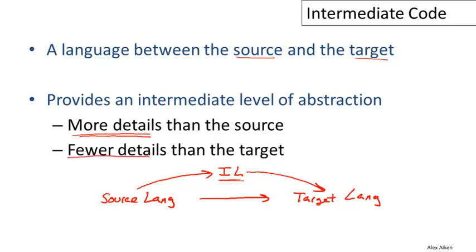On the other hand, the intermediate language will also have fewer details than the target. It might be, for example, that the intermediate language is a little bit above the level of the particular instruction set of a particular machine. Therefore, it's easier to retarget that intermediate level of code to lots of different kinds of machines, precisely because it doesn't have all the grubby details of a particular machine. Experience has shown that this is actually a pretty good idea — almost all compilers have an intermediate language in their implementation.